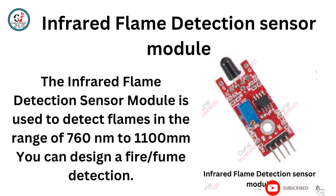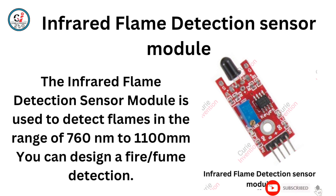Infrared Flame Detection Sensor Module. The Infrared Flame Detection Sensor Module is used to detect flames in the range of 760 nm to 1100 nm. You can design a fire and flame detection system with it.